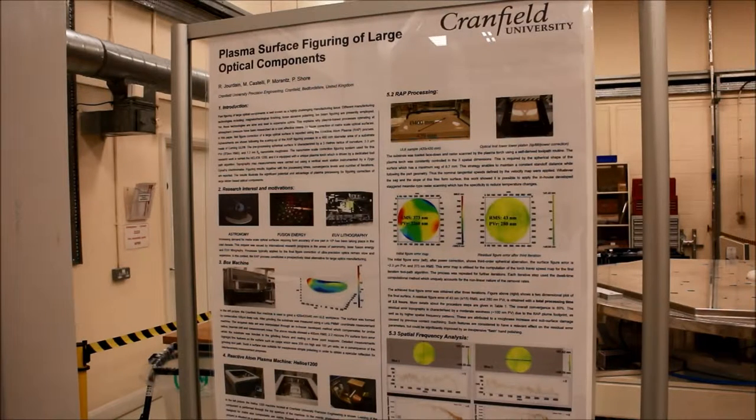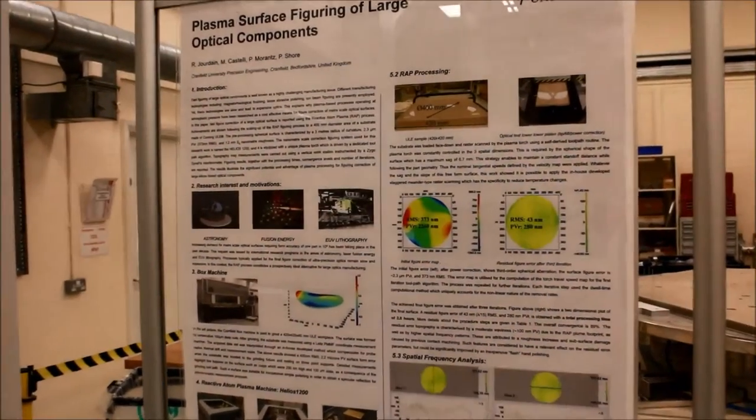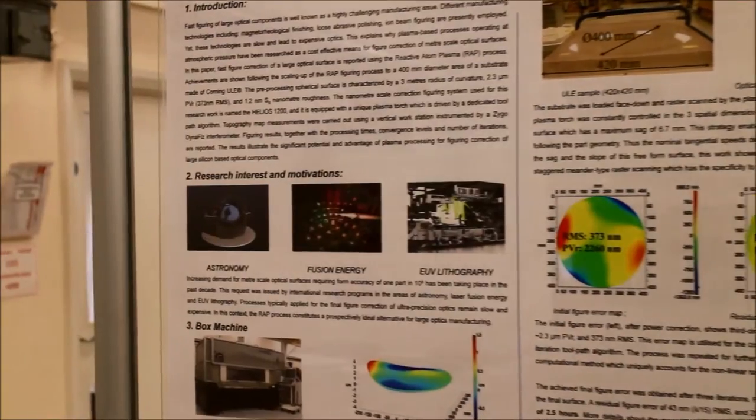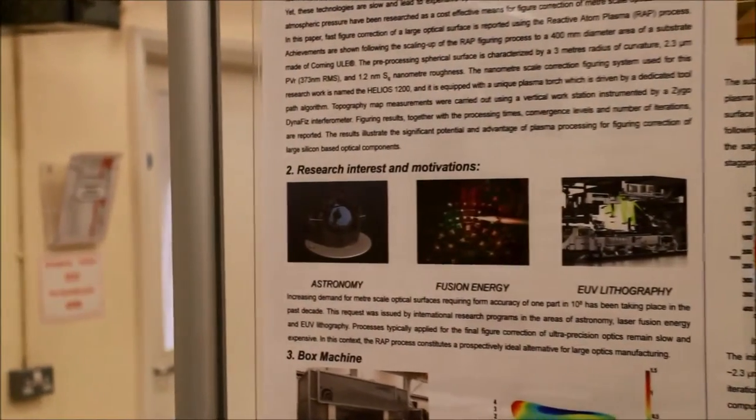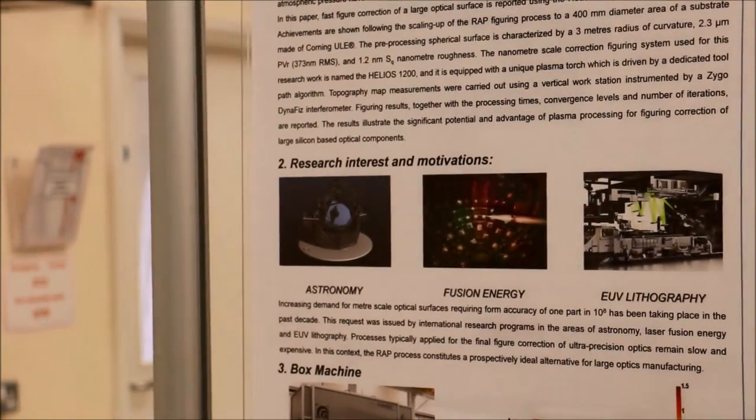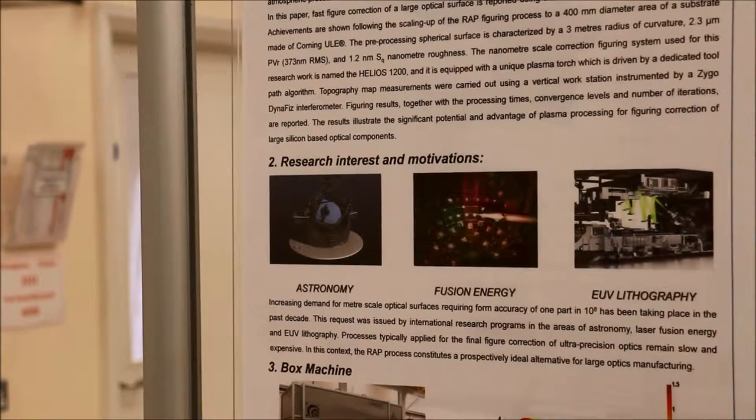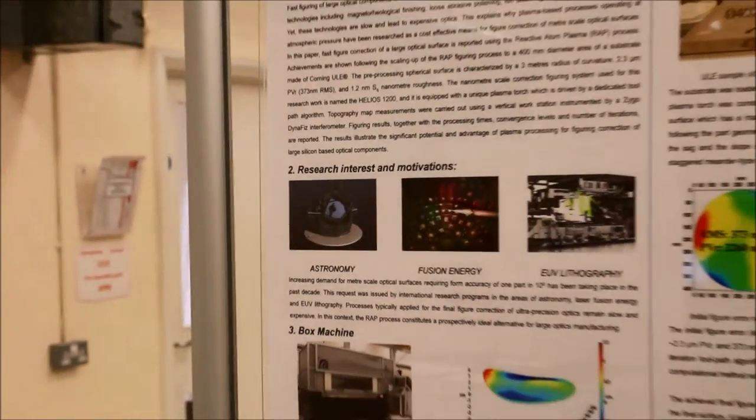Here at Cranfield we have developed a manufacturing process chain for the production of large optics like the mirror segments for extremely large telescopes. An example being the European Extremely Large Telescope which will be built at the European Southern Observatory in Chile. This is constructed from 798 segments each of approximately 1.4 meters in diameter.